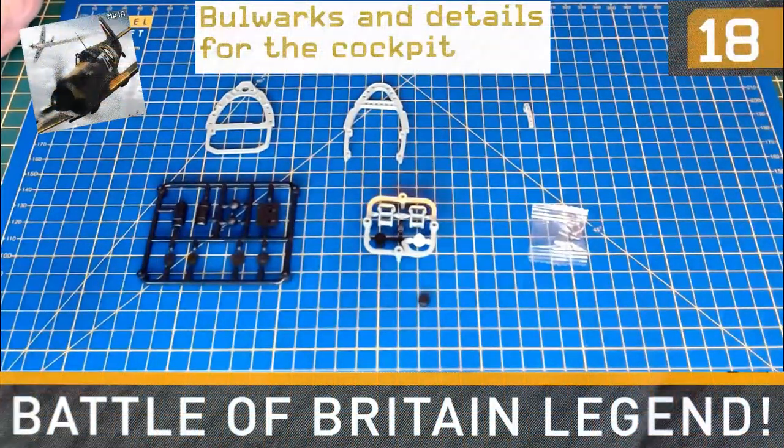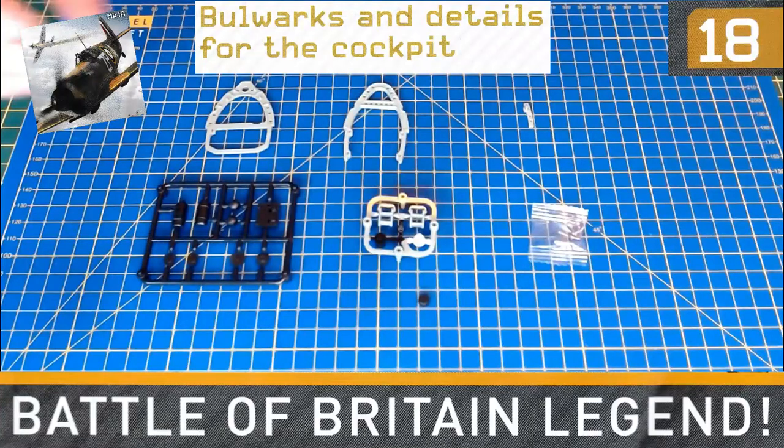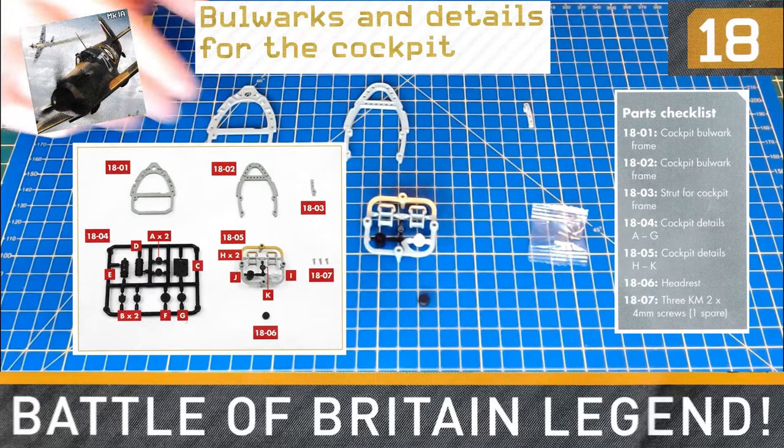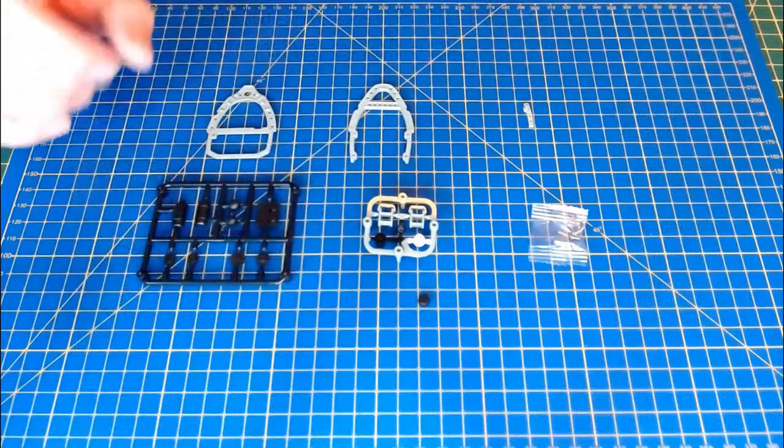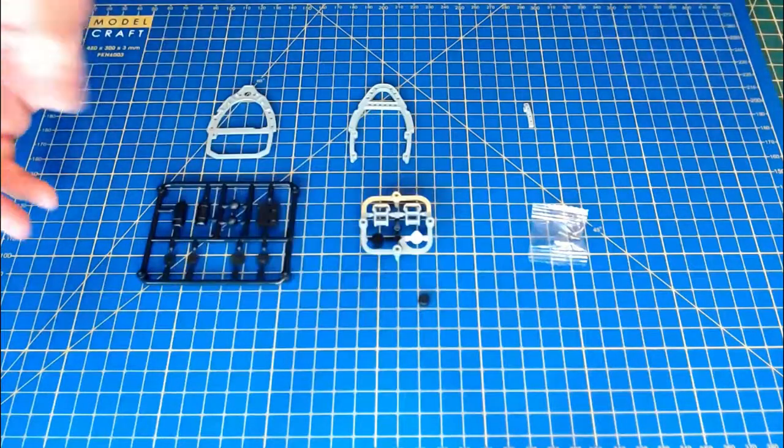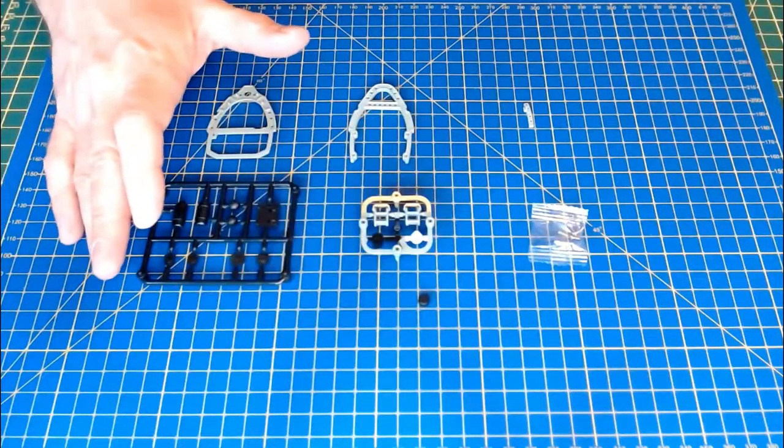Okay, so parts laid out here for issue 18. Details of cockpit again, but it looks like starting the framework parts. So it's going to be the bulkhead parts and lots and lots of details on sprues. Some very nice details actually. Let's get this built. This is issue 18.